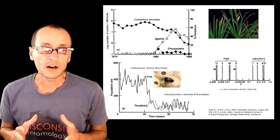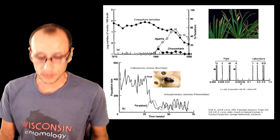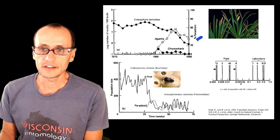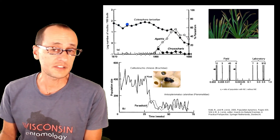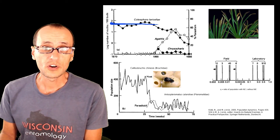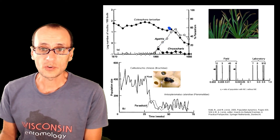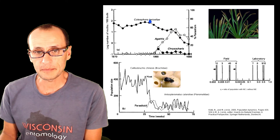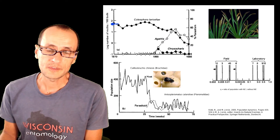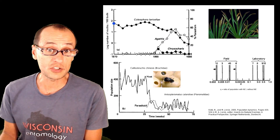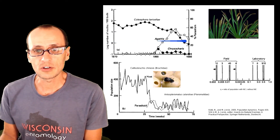Here's an example of the dynamics of populations of insects. Take the case-bearing moth here in black. The populations of these organisms in this particular study seem pretty stable over time through the 1970s and 1980s. And then there was a decline — actually, not so sudden, maybe it started around here — a decline in their abundance from maybe 1.8 log units, base 10, to almost two orders of magnitude less than that.